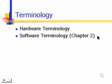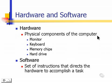Software terminology will actually be covered in Chapter 2, but since hardware and software work so closely together, we're going to define both at this point. When we talk about hardware, we're talking about the physical components of the computer — for example, a monitor, keyboard, memory chips, hard drive. When we talk about software, we're talking about a set of instructions that directs the hardware to accomplish a task.